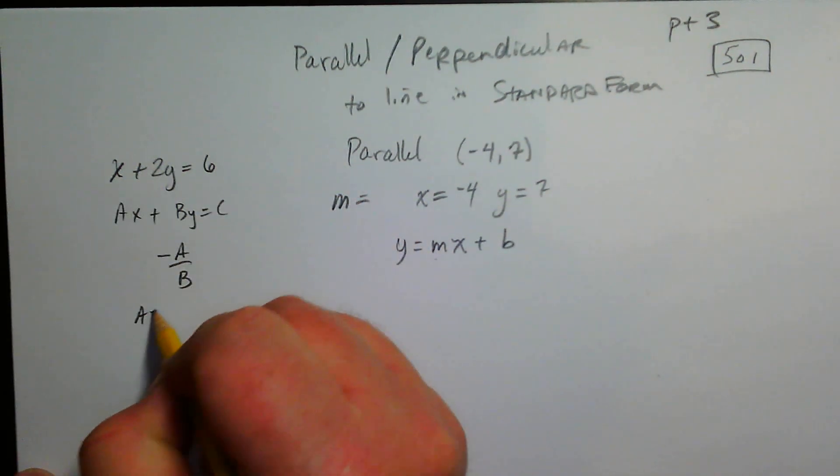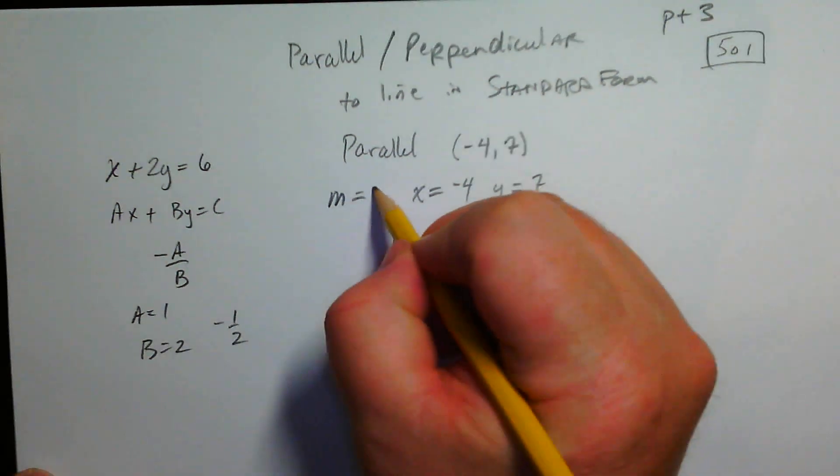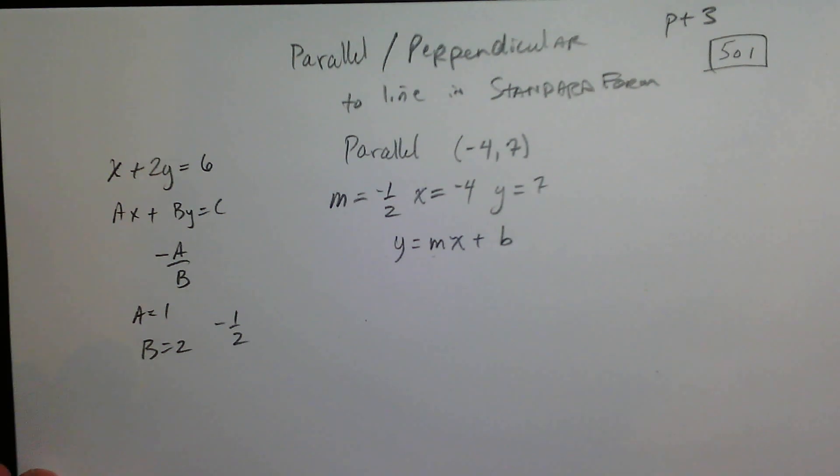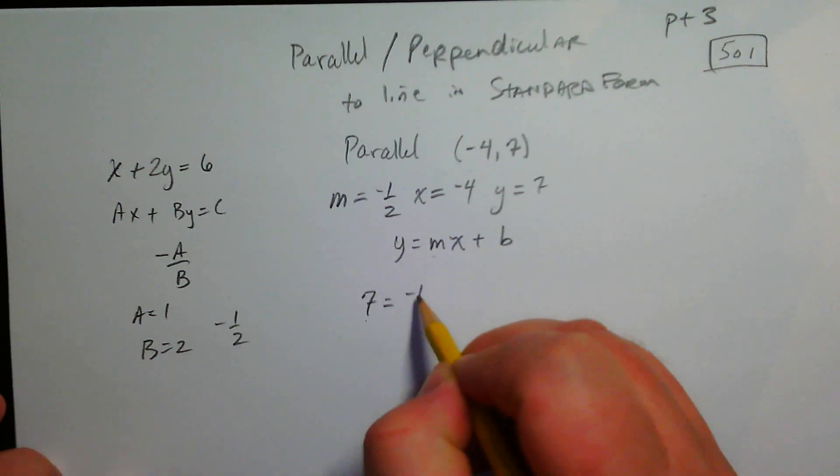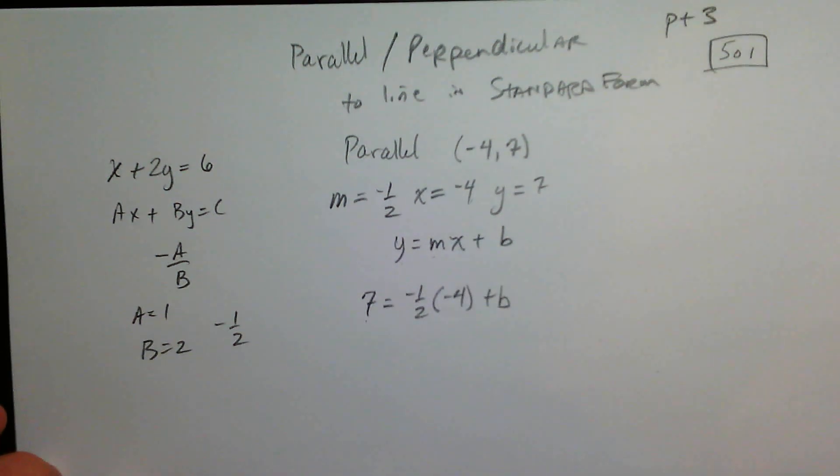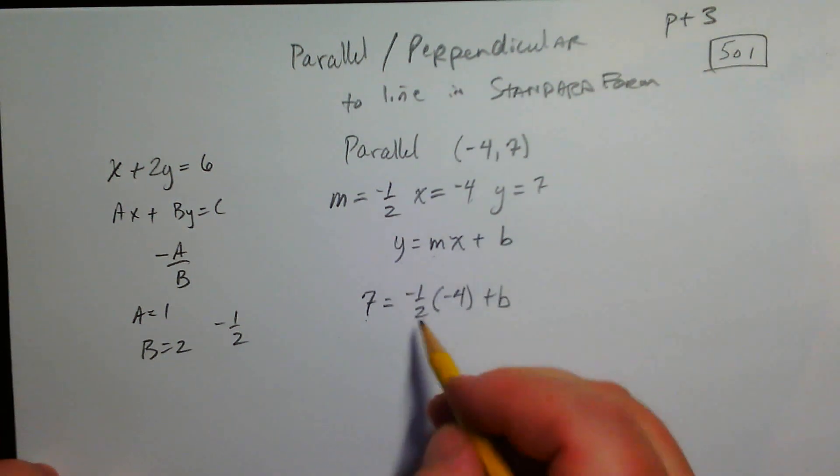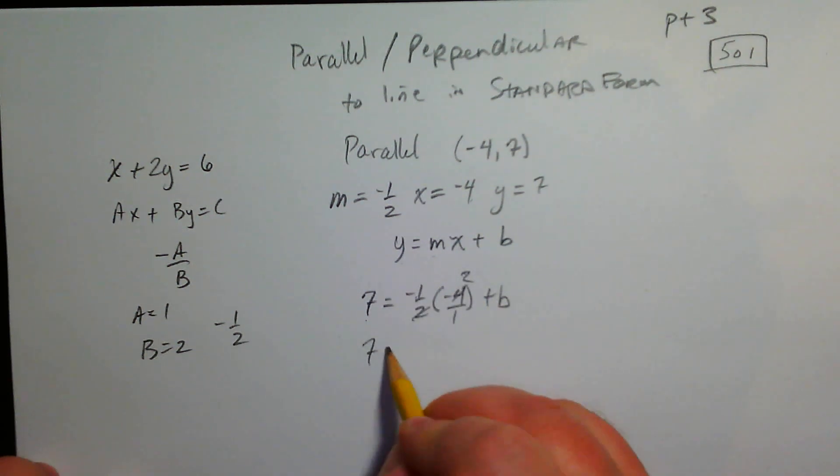Here, A is 1 and B is 2. So that would be a slope of negative one-half. That's our slope right there. So let's plug everything in. We've got 7 equals negative one-half times x. x is negative 4 plus b. Plugged it in. Now we're going to simplify it. That's 2. Negative times a negative is positive. 5 plus 2 is 7. So b is going to be 5.